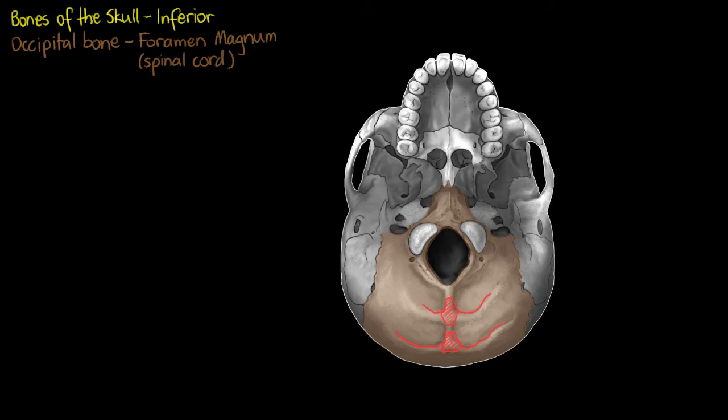The last structure we are going to see here as part of the occipital bone I will highlight in a different color and they are called the occipital condyles. I'm just highlighting it here in green.